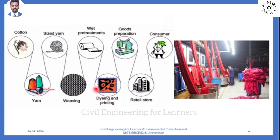After wet pretreatment comes dyeing and printing - all our clothes are printed with various designs. Next is preparation, where it is tailored to each size, then taken to retail stores for consumer use. From the goods preparation stage, when a tailor creates waste, that waste can be used for other purposes - such as making pillows or cots. But certain chemical wastes from wet processing cannot be reused.